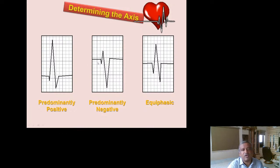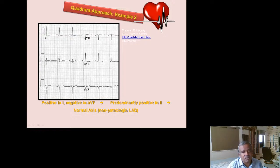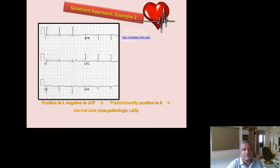To clarify the axis assessment: Lead I positive, aVF negative = LAD; Lead I negative, aVF positive = RAD. However, if Lead I is positive, aVF is negative, but Lead II is also predominantly positive, this is a non-pathological LAD — considered normal. If Lead I is positive, aVF is negative, and Lead II is also negative, this is pathological LAD. If Lead I is negative and aVF is positive, this is RAD.